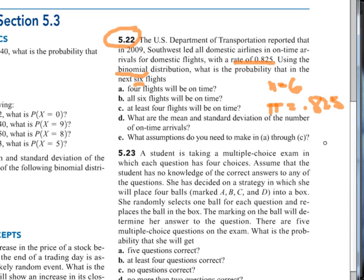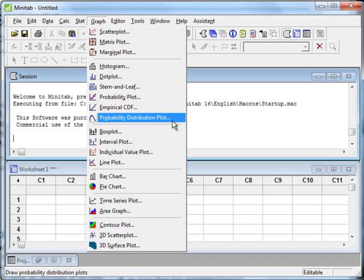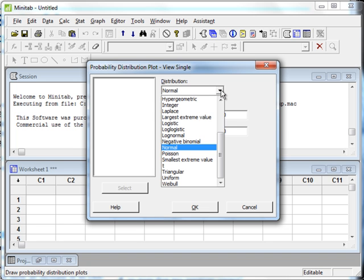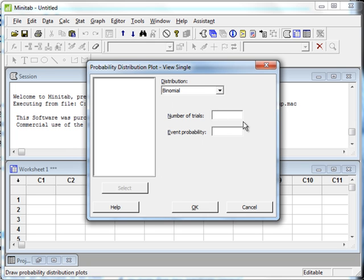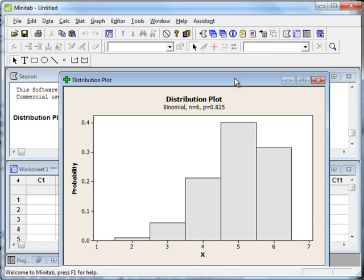I'm going to click over to Minitab to make this distribution. And here we're going to go to the graph of the probability distribution just to look at the graph. I'm going to click OK, choose binomial. Our number of trials—that was the number of flights that we were reviewing—six flights. The event probability is 0.825. I just plug those values in and push OK. And it plots the distribution for us. We can see each probability as we drag the mouse over the bar. And now we've built a binomial distribution.